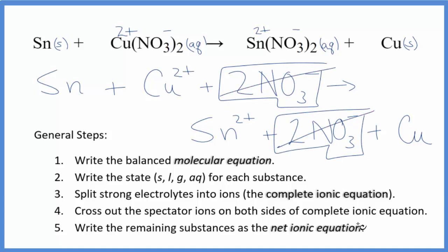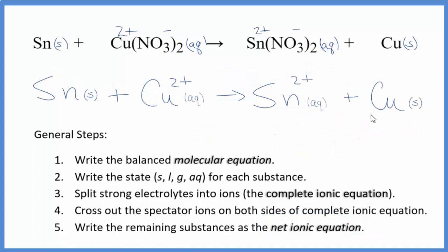What's left? That's the net ionic equation for Sn plus Cu(NO3)2. Let me clean this up. We'll have our net ionic equation. So this is the balanced net ionic equation for this tin plus copper 2 nitrate.